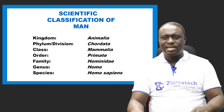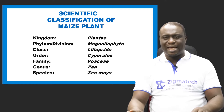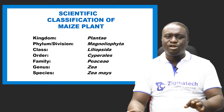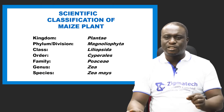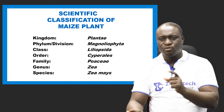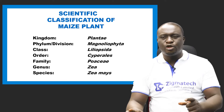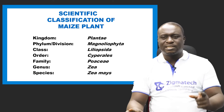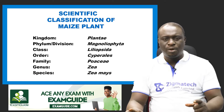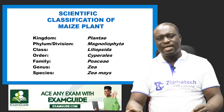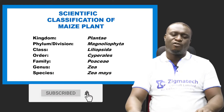Let's take a look at the scientific classification of a maize plant. Kingdom — Plantae; Division — Magnoliophyta (not phylum — we use division for plants); Class — Liliopsida; Order — Cyperales; Family — Poaceae; Genus — Zea; and Species — Zea mays. This is the scientific classification of the maize plant.